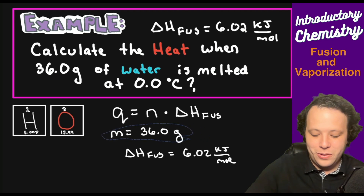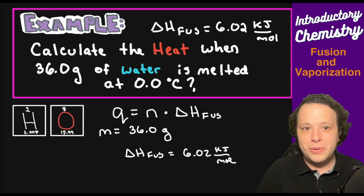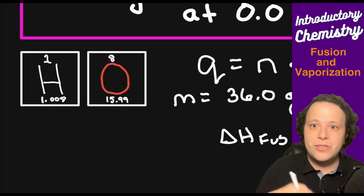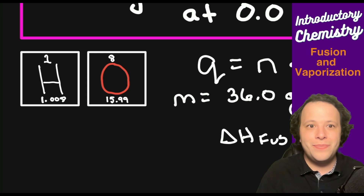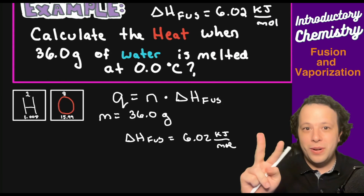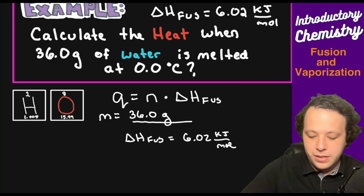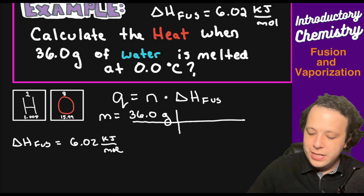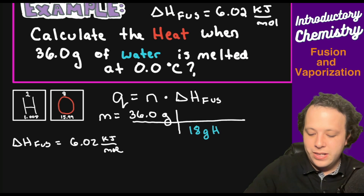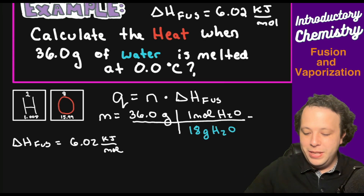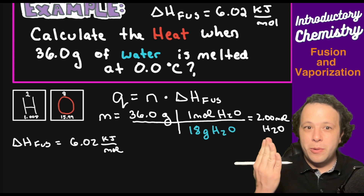Our goal is always moles. Water has one oxygen and two hydrogen atoms, giving a molar mass of 18 grams per mole. So 36 grams divided by 18 grams per mole gives us 2 moles of H₂O.